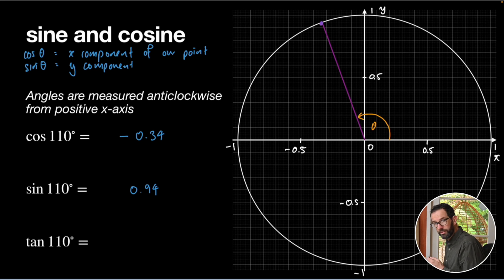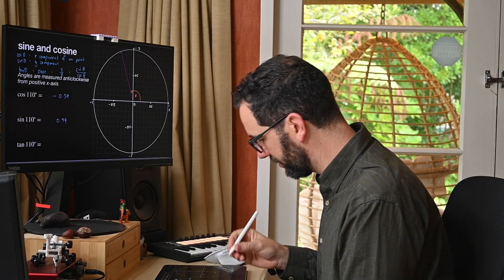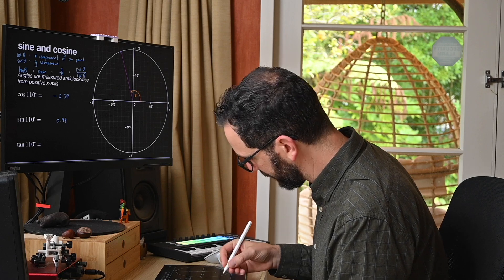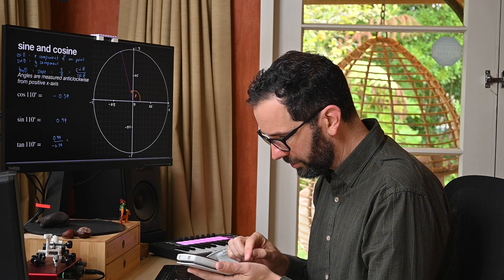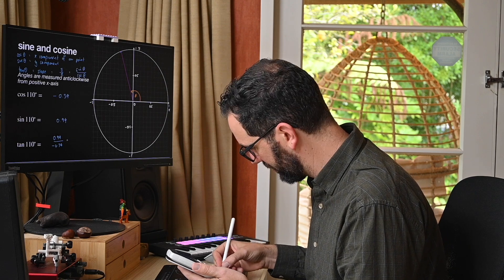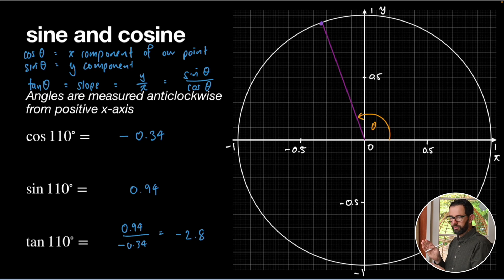And finally, tan of the angle theta, well, that's simply equal to the slope of this purple line. So, tan θ is just the slope. So, we could write that as the y-value of the rise, divided by the x-value of the run, or, if you like, as sin θ divided by cos θ. So, I can work out tan of 110 degrees here, as approximately, so sine over cosine, or y over x, 0.94. We're expecting it to be negative, because that line is sloping downwards. Divided by negative 0.34, which tells me that tan of my angle should be around about, let's just do that on the calculator, 0.94 divided by negative 0.34. Tells me that tan θ is around about negative 2.8.